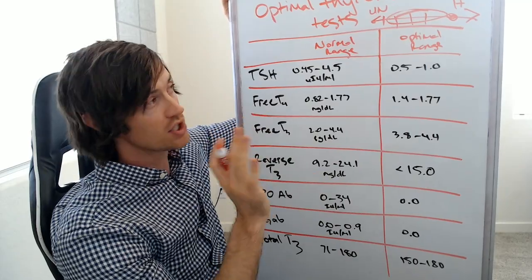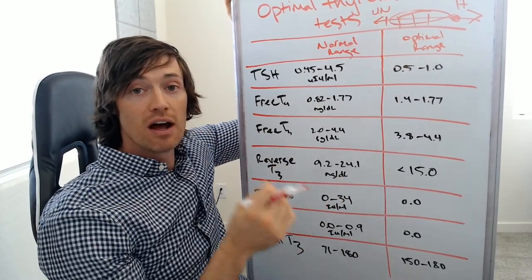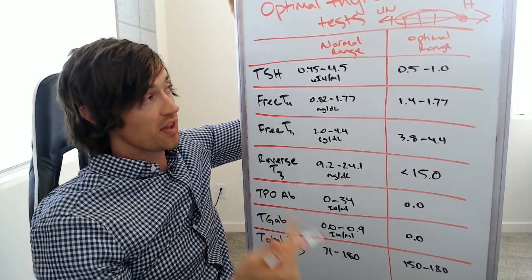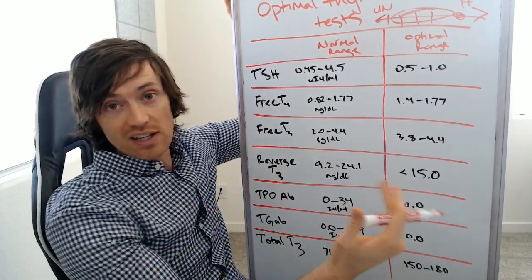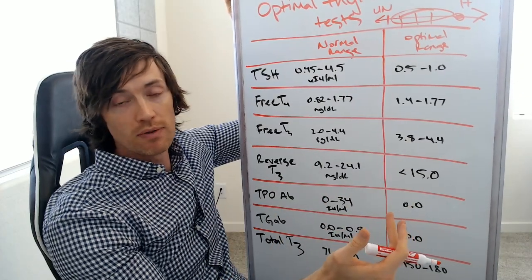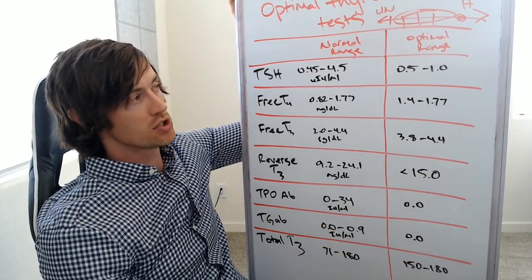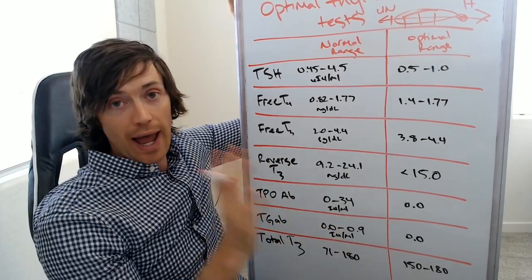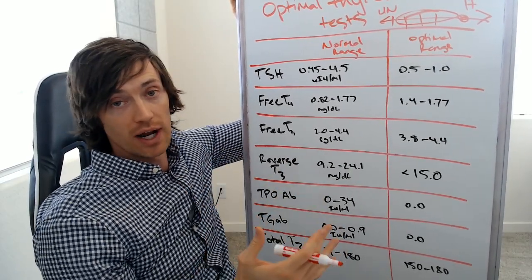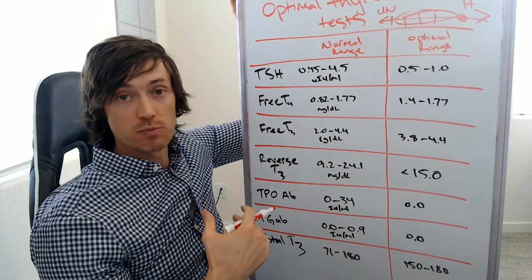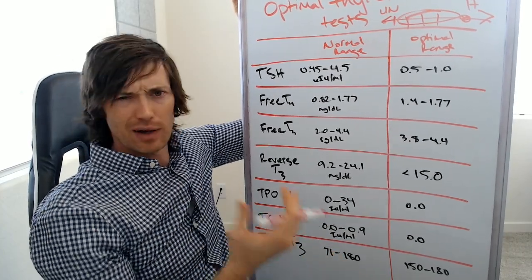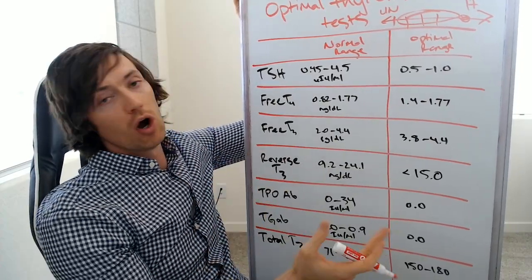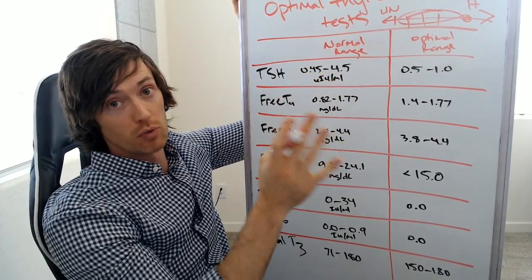What the optimal range allows you to do is find and identify thyroid problems early, because then you can start treating them either naturally or with thyroid medication. You don't have to wait until you're grossly abnormal before your doctor puts you on thyroid medications. Because what happens is that a lot of people are walking around with thyroid problems but have been told they're completely normal. They feel terrible and have all the symptoms of hypothyroidism, but they're looking at it through the wrong lens.